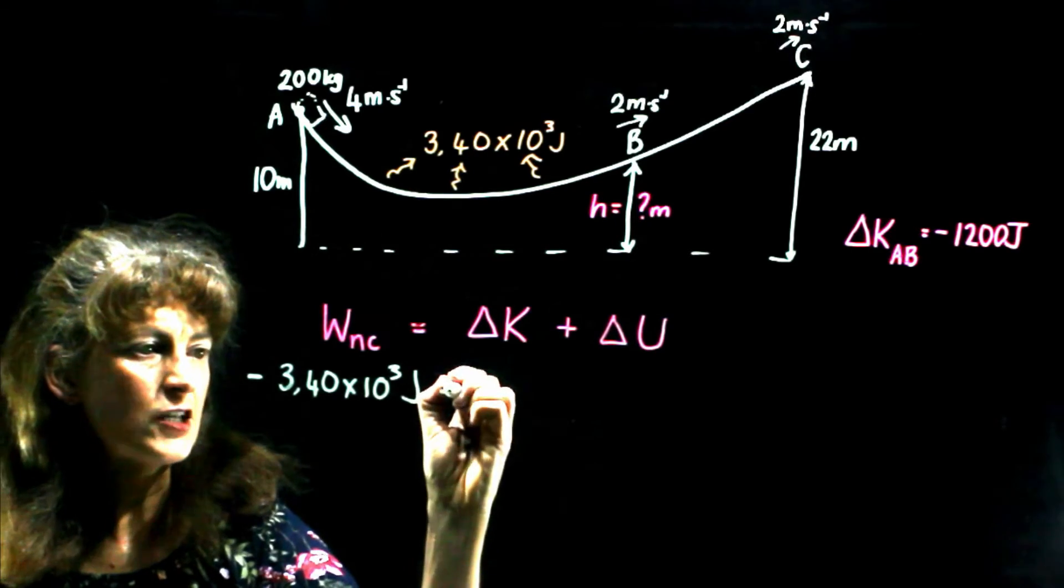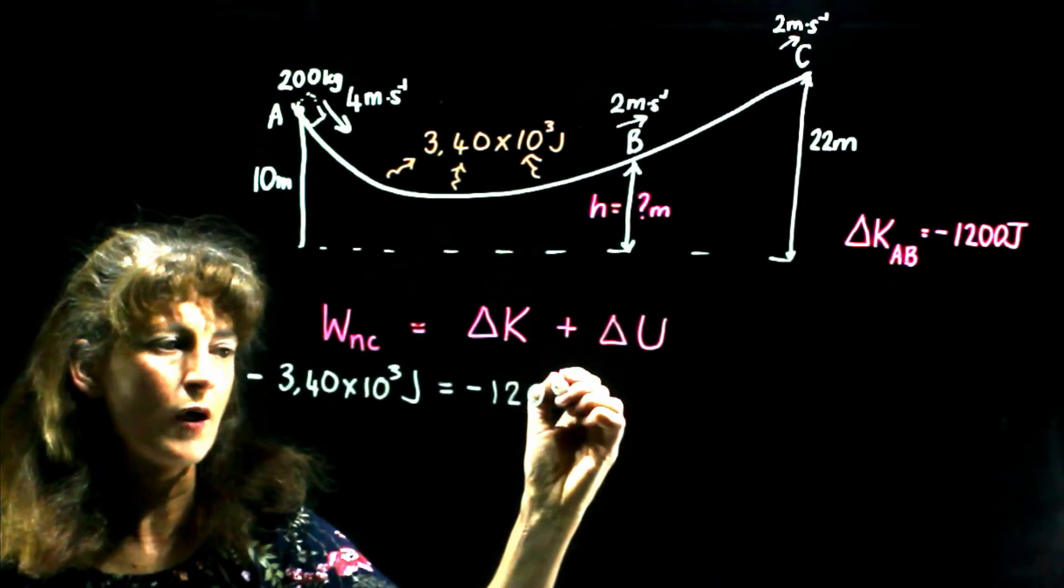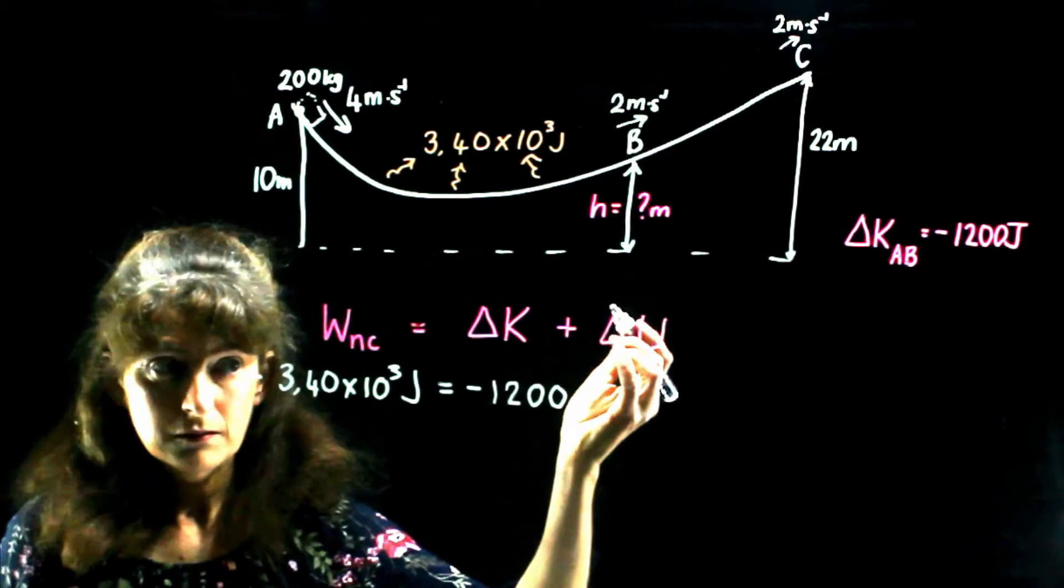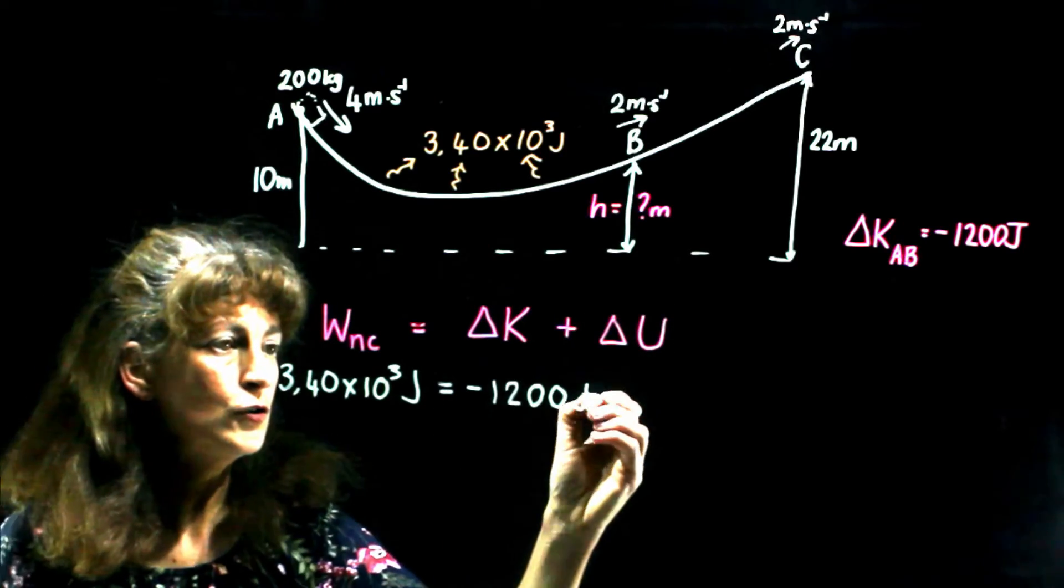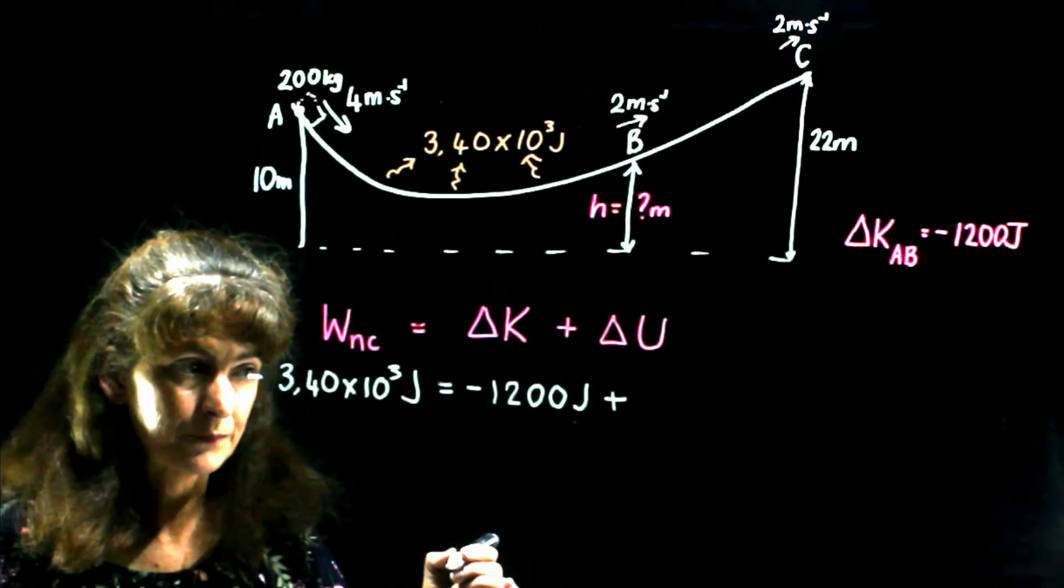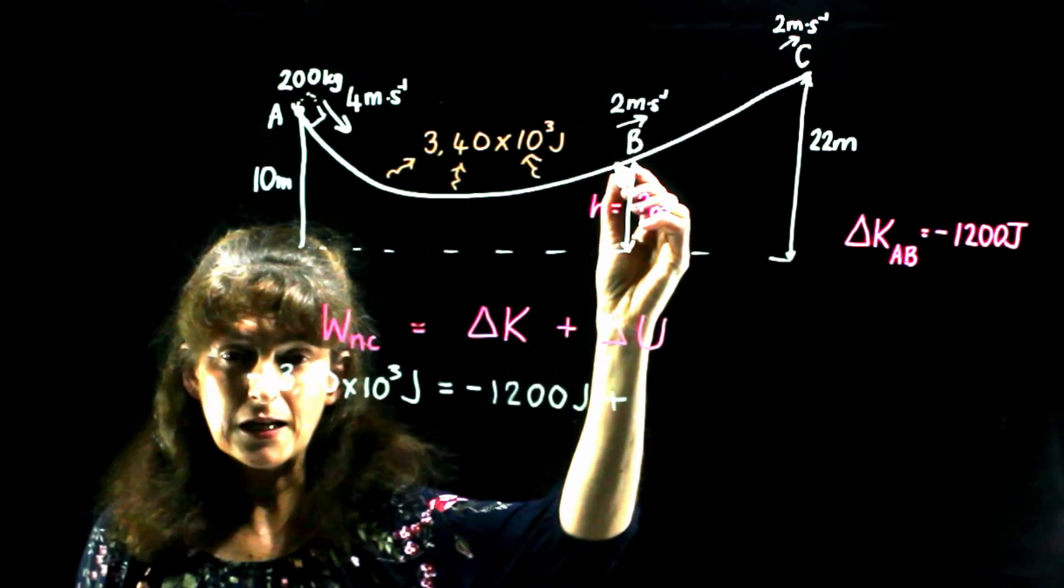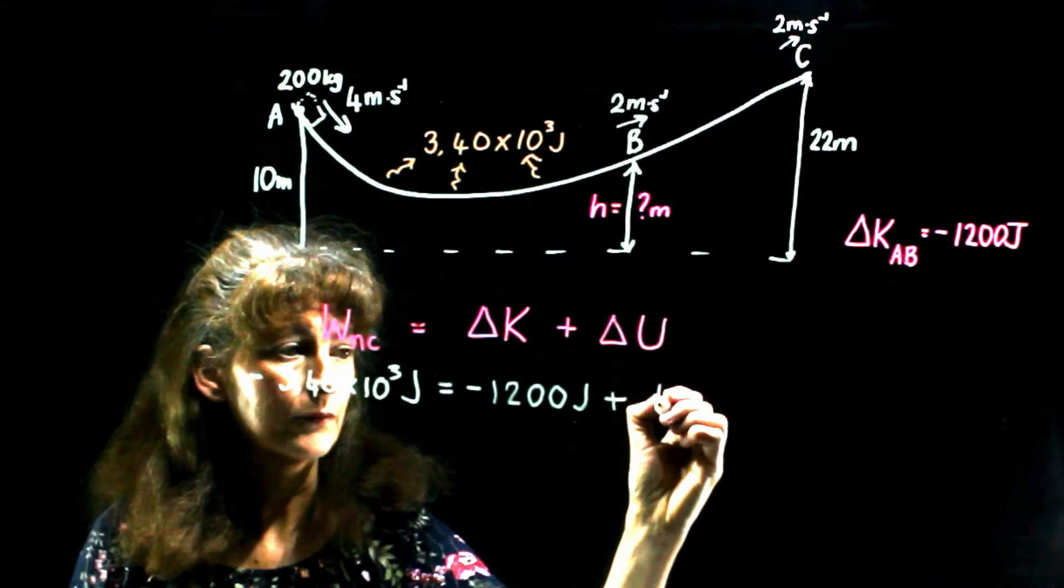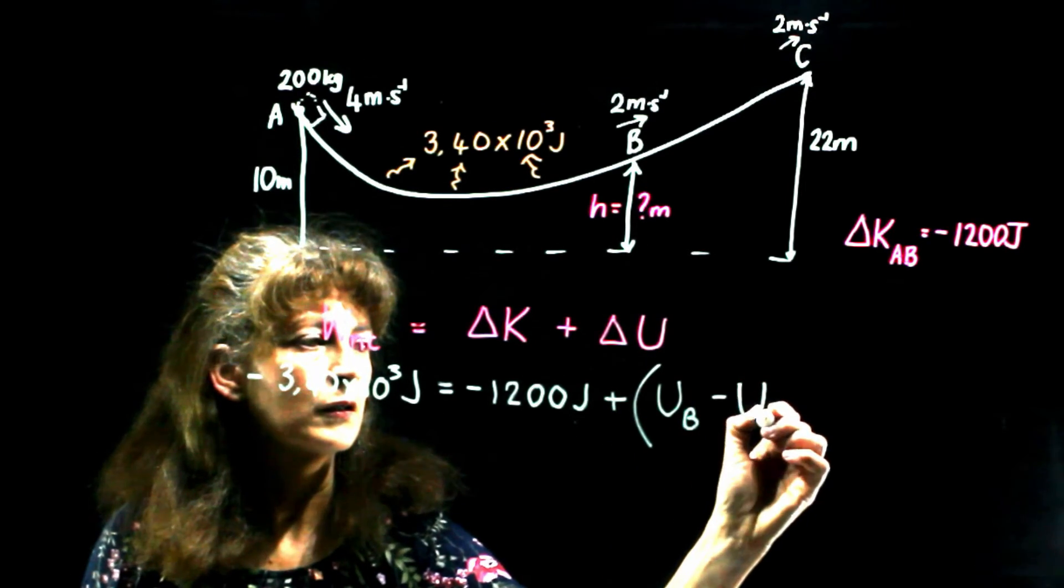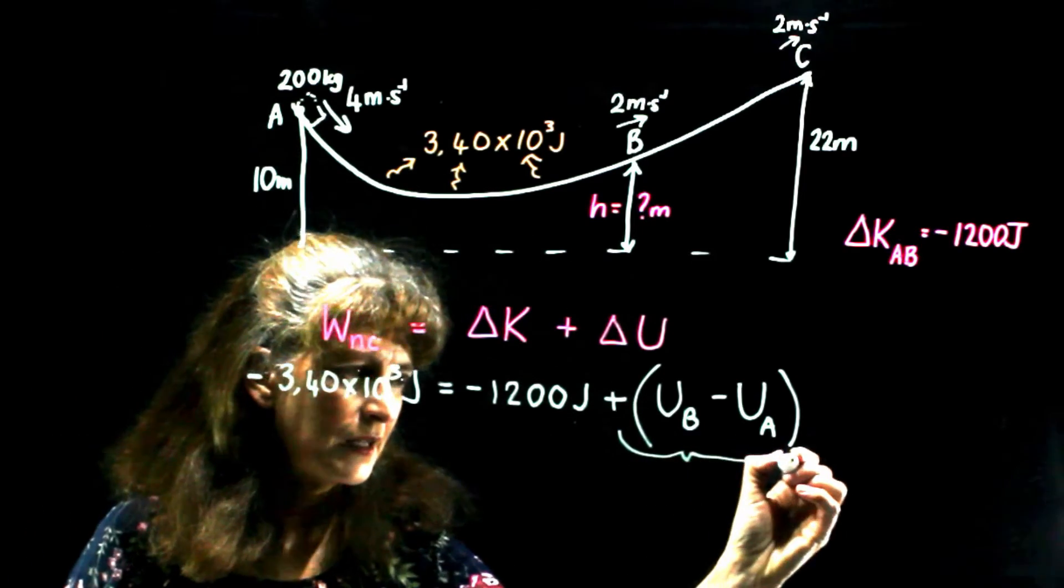Negative 3.4 times 10 to the power 3 joules of work was done by friction, which is a non-conservative force, in order to dissipate that amount of energy. And that equals the change in kinetic energy, which we've seen is negative 1,200 joules. And the reason why that is negative is because the velocity decreased. So obviously, the kinetic energy did too, plus change in gravitational potential energy, which means final. In other words, it'd be gravitational potential energy minus initial. In other words, it's A.